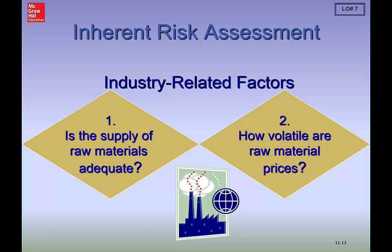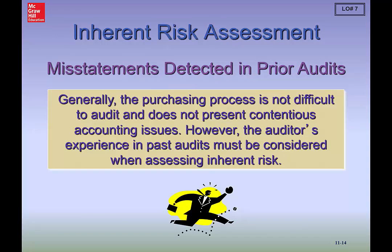Inherent risks related to the industry include whether the supply of raw materials is adequate and how volatile those prices are. As an auditor, you must consider this to ensure that purchases are recorded at the correct price. You may also have misstatements detected in prior audits. The purchasing process is usually not that difficult to audit, but experience from past audits can itself be an inherent risk if you start taking certain things for granted.